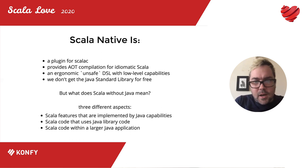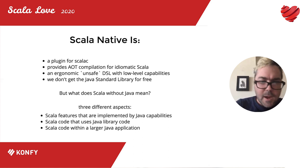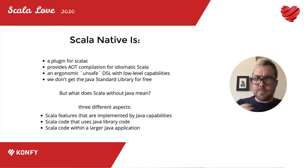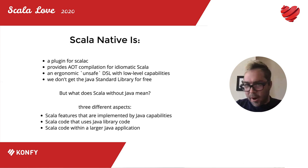The problem that Scala JS had to solve — before Scala Native did — is what Scala without Java means conceptually, because so much of the early appeal of Scala was its compatibility with Java. There are really three different aspects to Scala's dependency on Java: core Scala features implemented by Java capabilities like string and byte; Scala code that depends on Java library code — for example, Slick depends on JDBC; and at the application layer, Scala code linking to a larger Java application, which I think is moving out of favor.